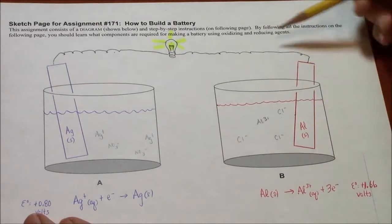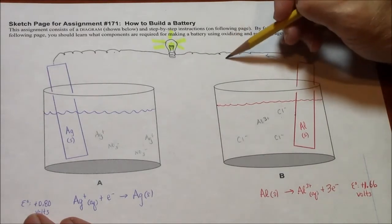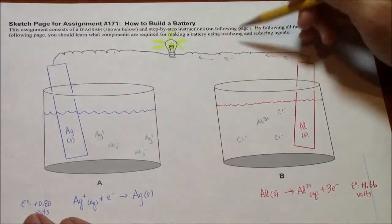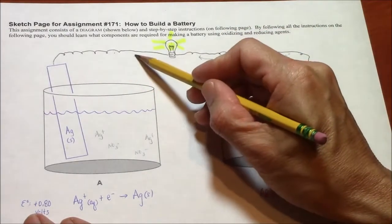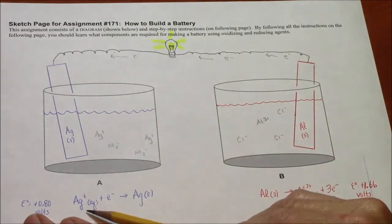What this means is that electrons come out of the aluminum, and they travel toward the silver through this wire. When they get to this side, reduction occurs.